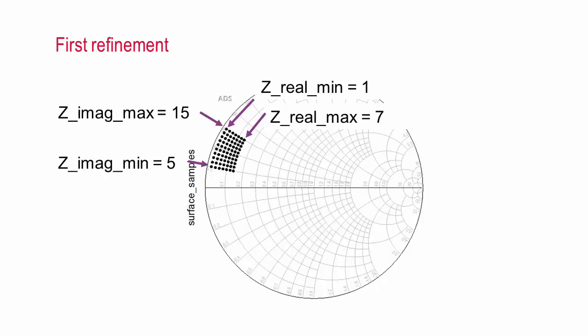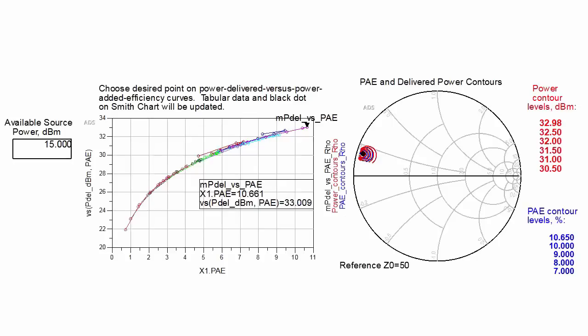This shows the smaller region of the Smith chart to be sampled. Now we see a substantial improvement in output power and PAE.